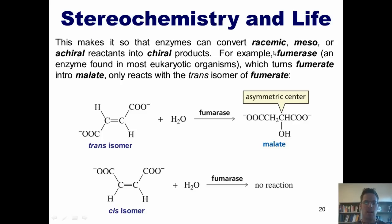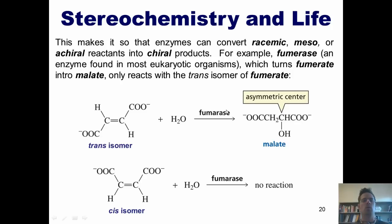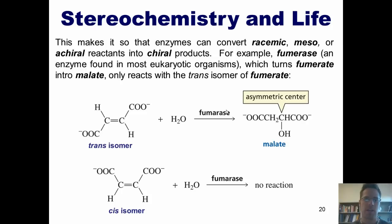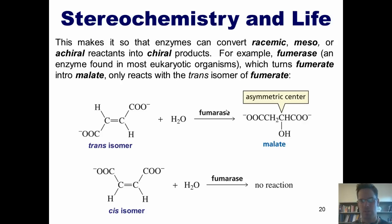This enzyme, fumarase, has the ability to completely distinguish between these diastereomers and only react with one and not the other. So that brings us to the end of our Chapter 5 coverage of stereochemistry. Thanks for hanging in there and listening to this long and hopefully interesting discussion from the world of organic chemistry. Until next time, please have an enjoyable rest of your day.